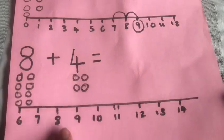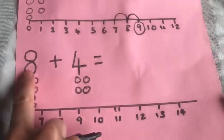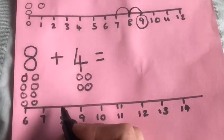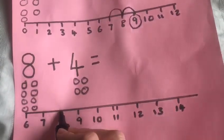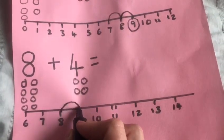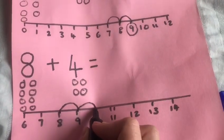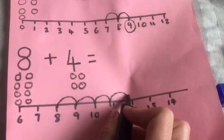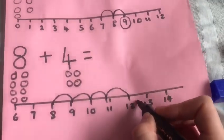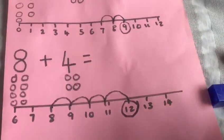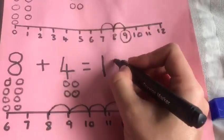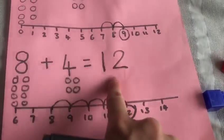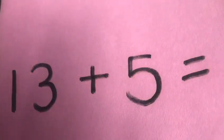Or you might have used the number line. So you find the first number, which is eight — there it is. Put your pen on the eight. Now you want to jump four times, jumping to each number — one, two, three, four. And look, twelve. So my answer is twelve. Eight add four is equal to twelve.